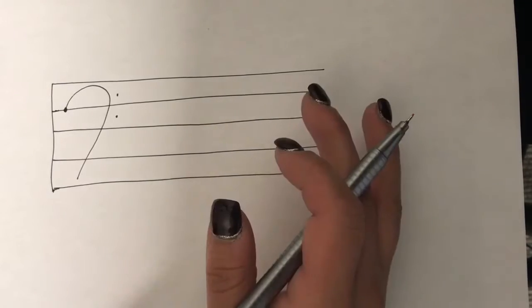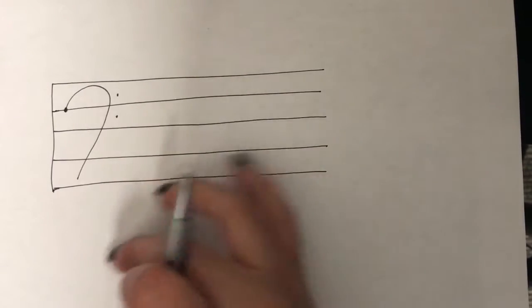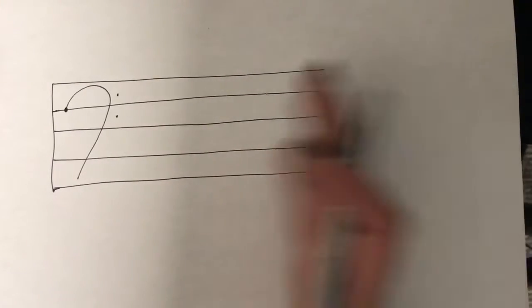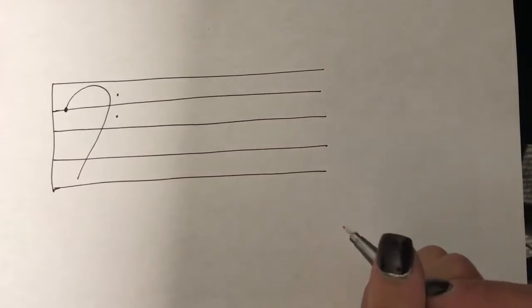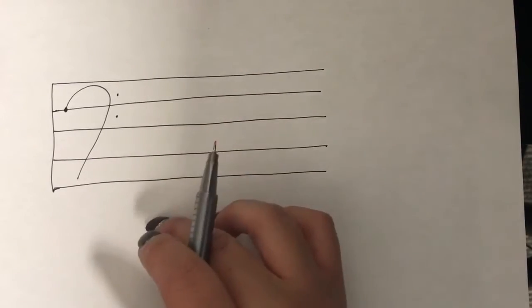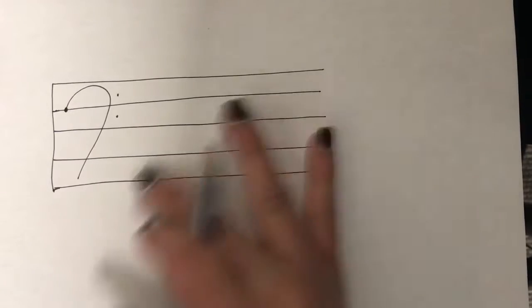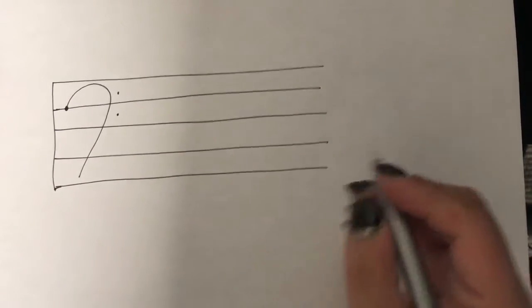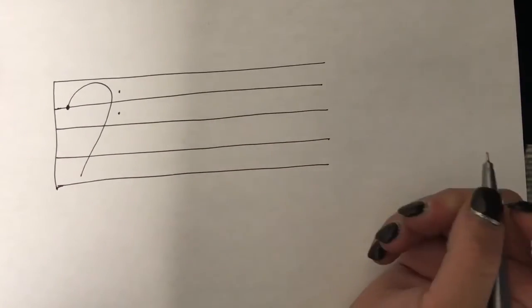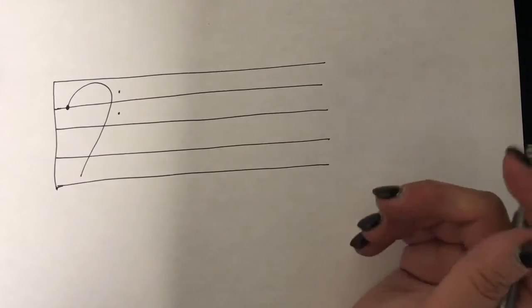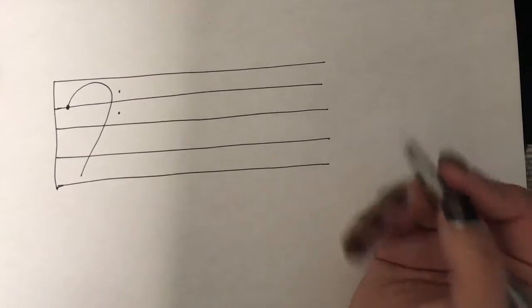But the spaces don't create a word, so the names of the notes in the spaces don't create one word. So we have a way to remember, a mnemonic device, to remember the names. For the spaces, the mnemonic device we use is All Cows Eat Grass.